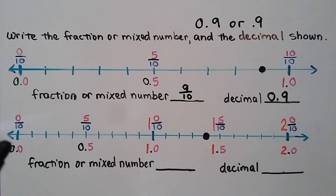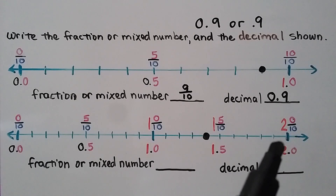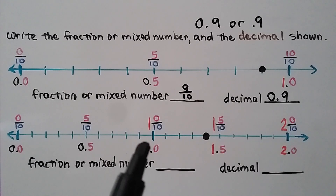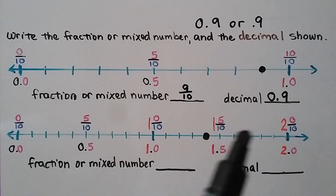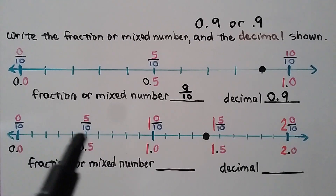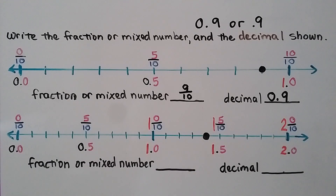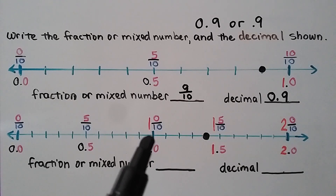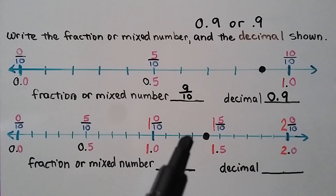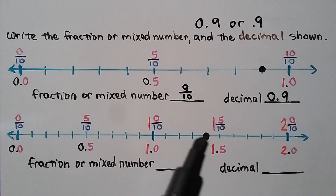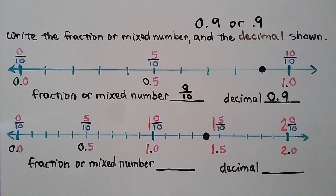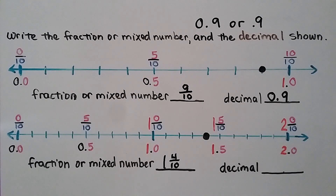On this number line, it starts at zero as zero-tenths and goes up to two as two and zero-tenths. All denominators are tens, so this number line is in tenths. The point is right before one and five-tenths. Starting at one and zero-tenths and counting: one and one-tenth, one and two-tenths, one and three-tenths, one and four-tenths — that's reasonable because the next mark is one and five-tenths. This must be one and four-tenths, written as the decimal 1.4.